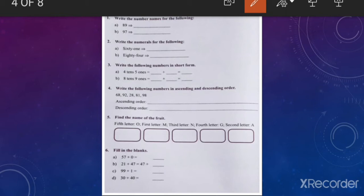Next, number two, write the numerals for the following. Children, you have to write in digits, okay? Like 61, in this way.